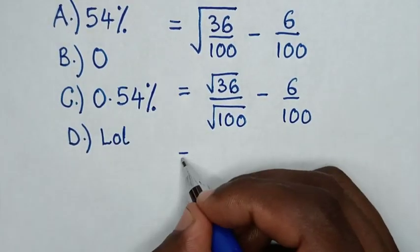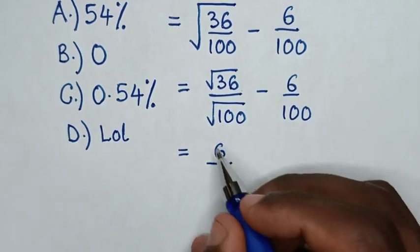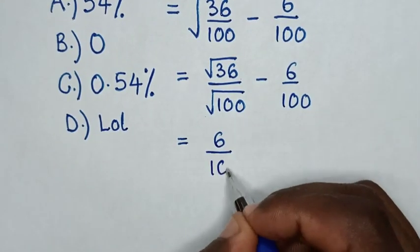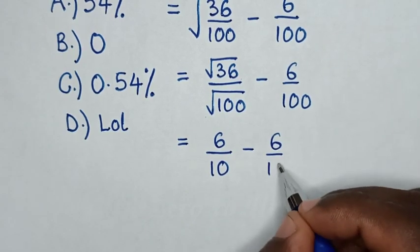In the next step, it equals the square root of 36, which is 6, over the square root of 100, which is 10, minus 6 over 100.